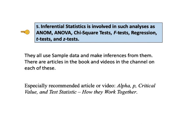Key to understanding number 5 says: inferential statistics is involved in such analyses as ANOM, ANOVA, chi-square tests, F-tests, regression, T-tests, and Z-tests. They all use sample data and they all make inferences from them. There are articles in the book and videos on this channel on each of these types of analyses. It would also be a good idea to read the article or see the video on alpha, P, critical value, and test statistic — how they work together — as it gives a comprehensive explanation of the interactions among these four important numbers in inferential statistics, and it should help deepen your understanding.